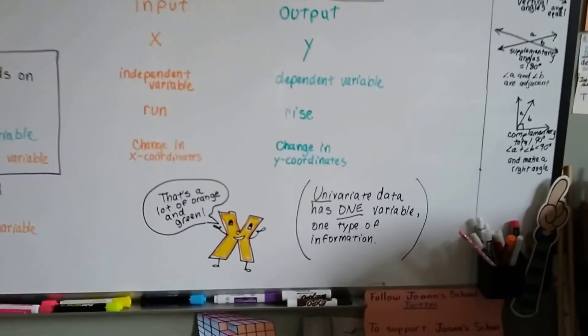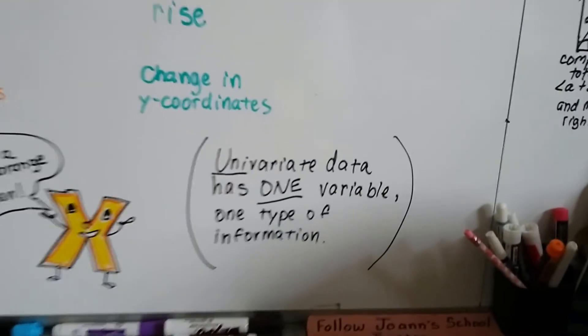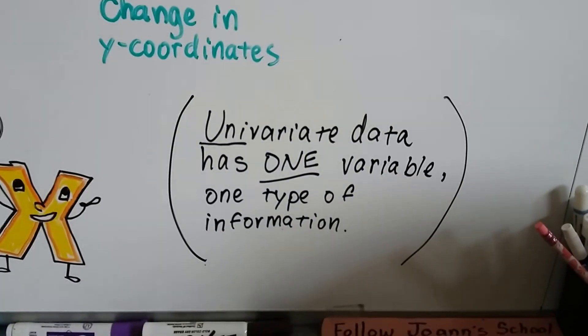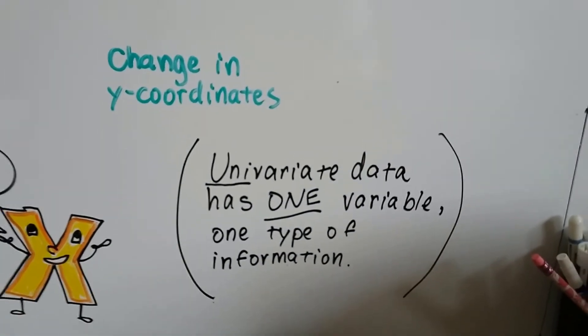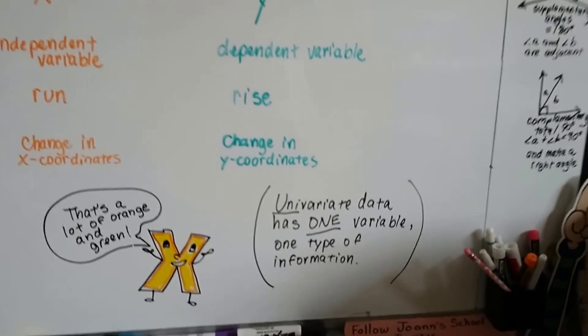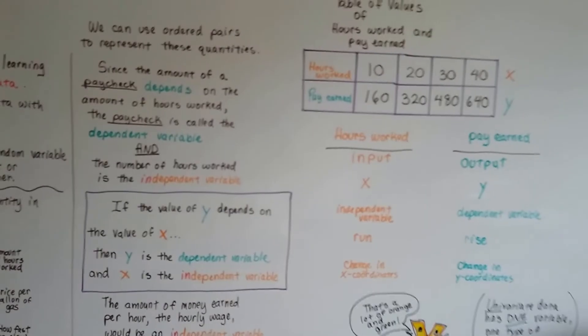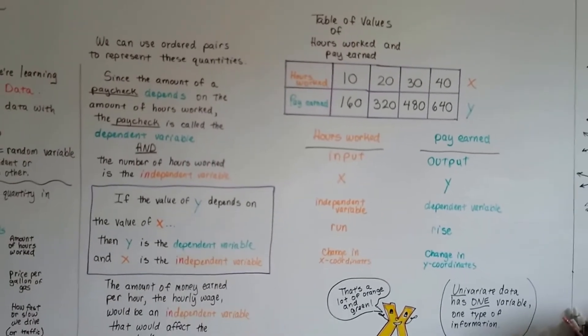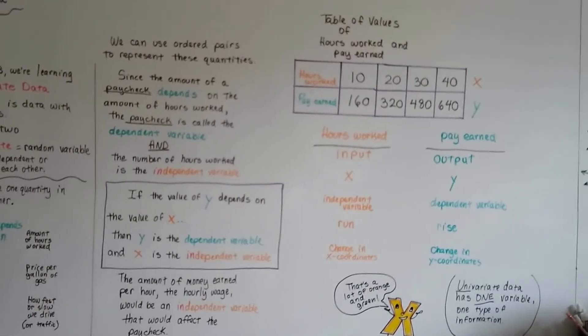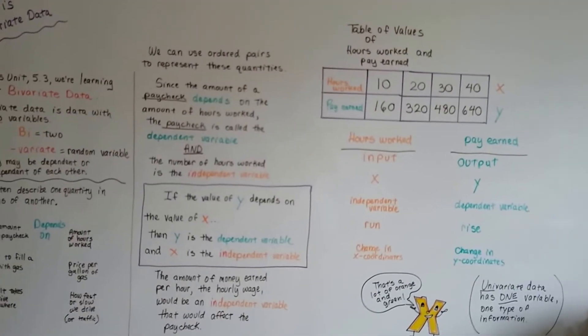And a univariate data, that has one variable. It's like one type of information. It would be like a list of times, or a list of weights. And you'd be able to find the average from that list of weights. But it's only one type of data.